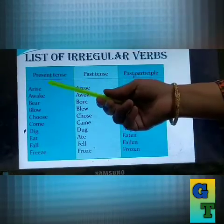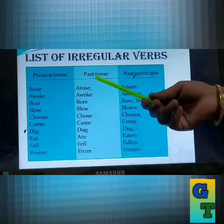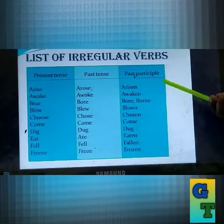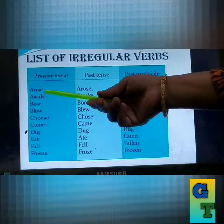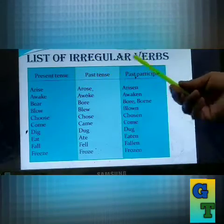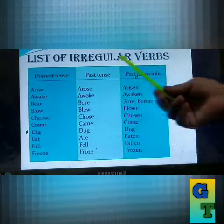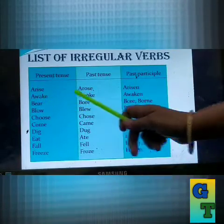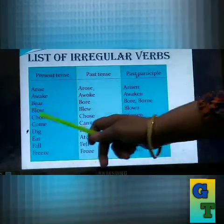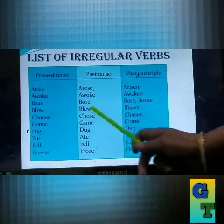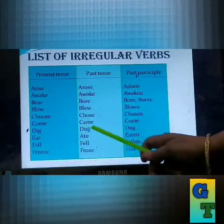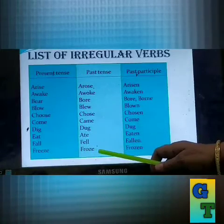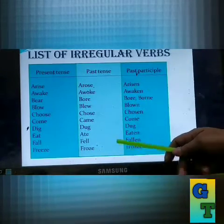We refer to them as V1 for present tense, V2 for past tense, and V3 for past participle. Now see 'arise' — it is an irregular form, no 'ed', no 'd', no 't'. 'Arise' changes to 'arose'. 'Awake' becomes 'awoke'. 'Be' becomes 'bore'. 'Blow' stays 'blew'. 'Choose' becomes 'chose'. 'Come' becomes 'came'. 'Dig' becomes 'dug'. 'Eat' becomes 'ate'. 'Fall' becomes 'fell'. 'Freeze' becomes 'froze'. Write down this list.